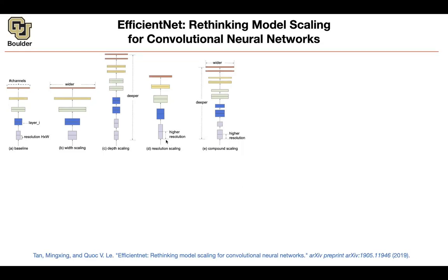The other idea is just to use higher resolution. This paper argues that there is a delicate balance between all three of these changes — resolution, width, and depth. If you do only one of them, you're not going to achieve as much as doing a combination of all of them. No matter how deep you go, you still need to make your network a little bit wider and still need to increase the resolution slightly. We need to do them all.